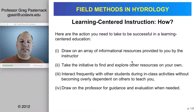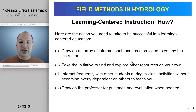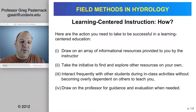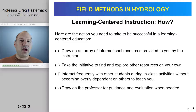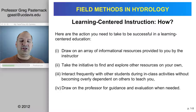So how do we go about a learning-centered education? Here are the actions you need to take to be successful in this class. First, you're going to have to draw on an array of informational resources, most of which I'll provide to you, but in this course being a capstone, many students also choose to go out and find additional information. Second, take the initiative to find and explore other resources on your own — question what you're told and go beyond just what is handed to you. Third, you're going to be interacting frequently with other students during in-class activities, but the key here is don't become overly dependent on them. You've got to engage and learn the material individually, but you can be facilitated through your collaboration and interaction with others. A divide-and-conquer approach to information in this course is not recommended.